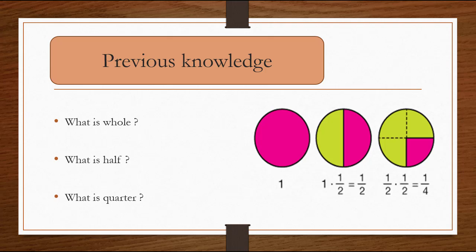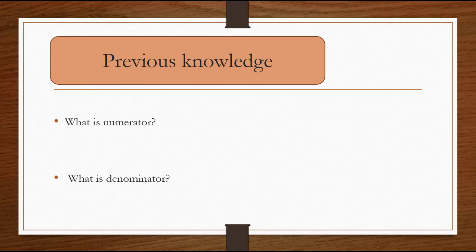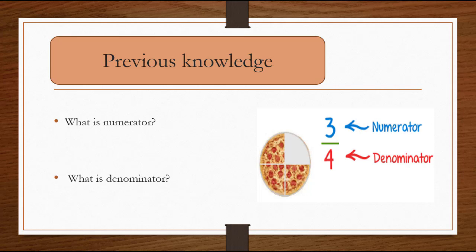When we combine two halves, then we get one whole. When we combine two quarters, then we get one half. And if we combine four quarters, then we get one whole. The fraction has two main parts: numerator and denominator. Here is a pizza divided into four equal parts and one part is used, leaving three parts. So the fraction for this is three over four — here three is the numerator and four is the denominator.